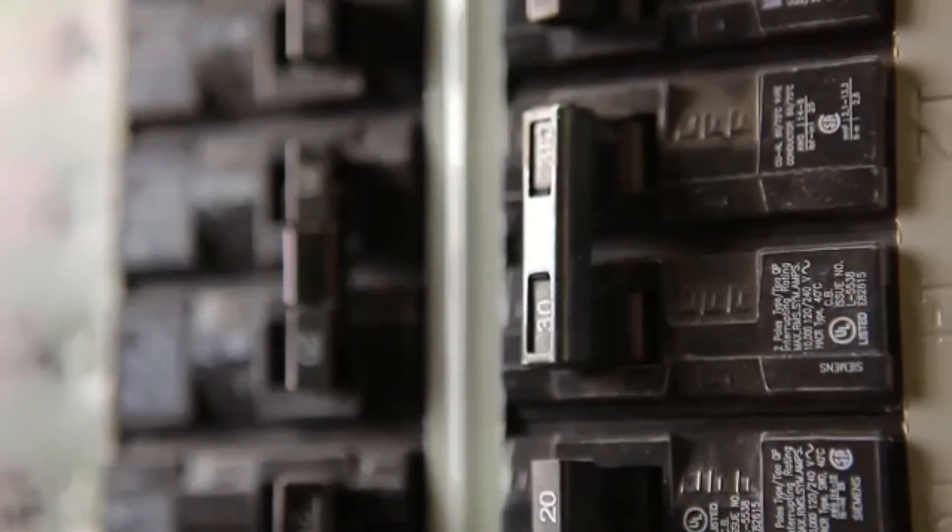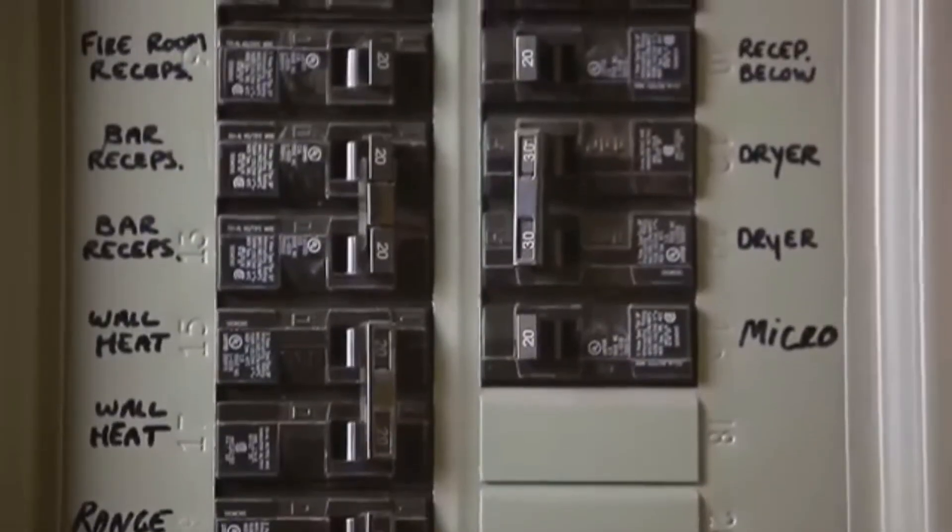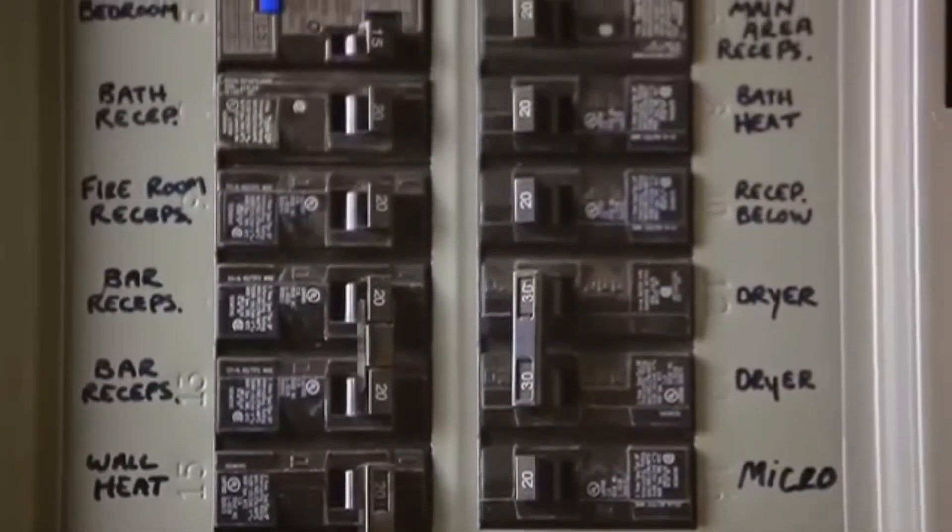An AFCI should be installed at your electrical panel to cut off the power in the event of an arc fault. Arc faults are a major source of home electrical fires, which can spread within the walls of your home before you even realize anything is wrong.